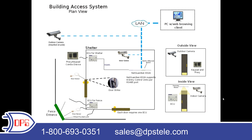The second most common application is for our building access system. Clients would like to control entry access using our entry control units, or ECU. We have a G3, G4, and LAN variation available. The G3 and G4 must be connected to a NetGuardian 832-way G5 unit or a G4 unit running special firmware. The ECU LAN can be connected directly to your LAN network, hence the name.